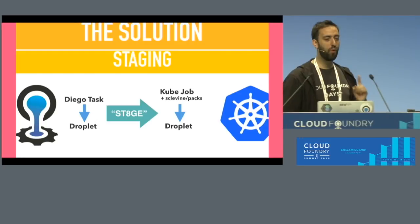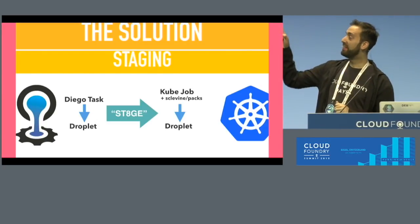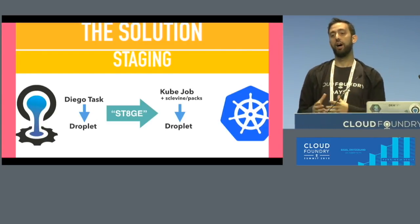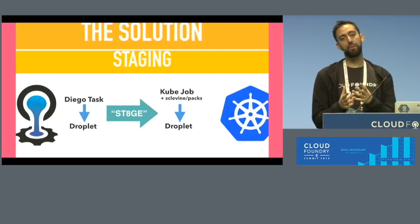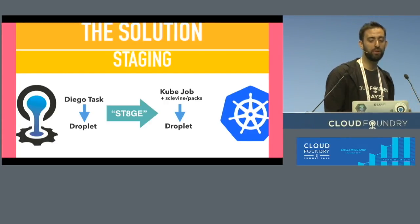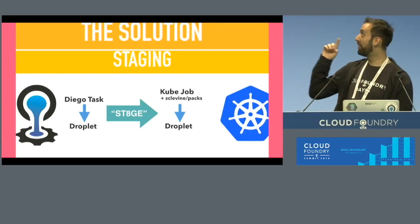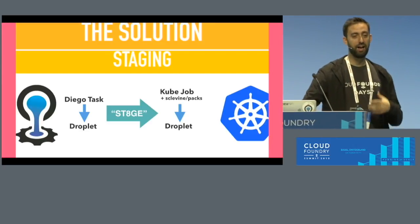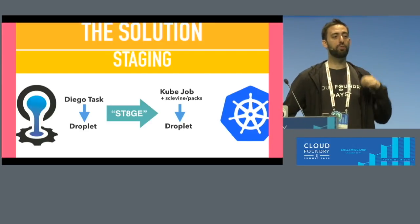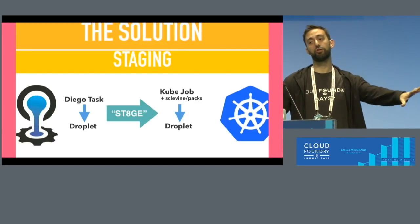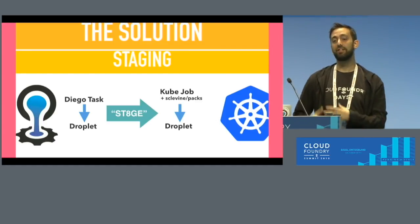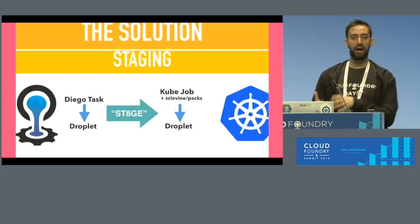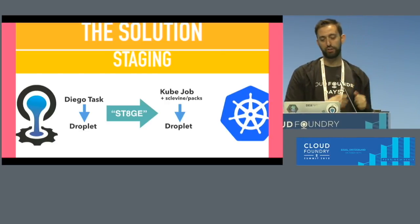There is one other thing: our staging component, which we obviously call Stagionettes. It lets us do staging without needing Diego. We run the same buildpacks code in a Kubernetes job. It converts your code and uploads droplets — not images — because we want to keep the ability to patch and roll back droplet versions.